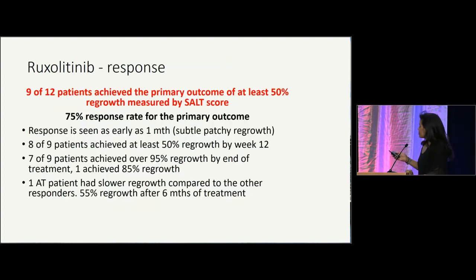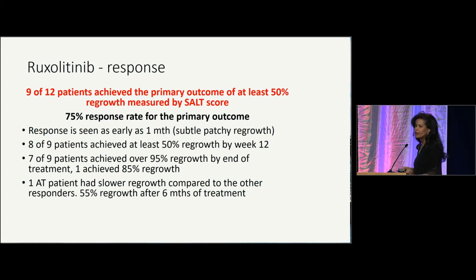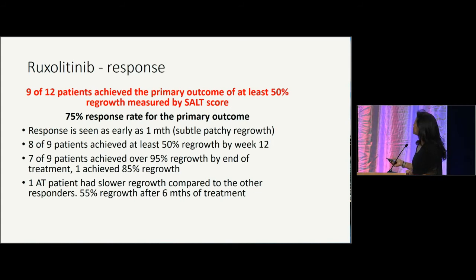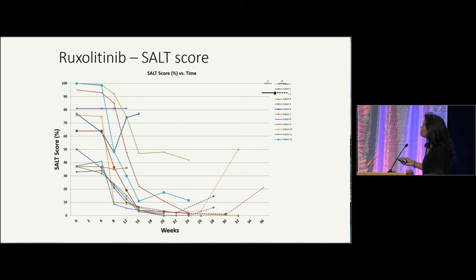A summary of our findings: nine of 12 patients achieved the primary outcome of at least 50% regrowth as measured by SALT score, which is a 75% response rate — really quite a significant response. We saw a response as early as one month, and eight of the nine patients achieved at least 50% regrowth by week 12. This is illustrated graphically — you can see patients starting with high SALT scores indicating significant hair loss, with scores dropping quite precipitously as they regrow.